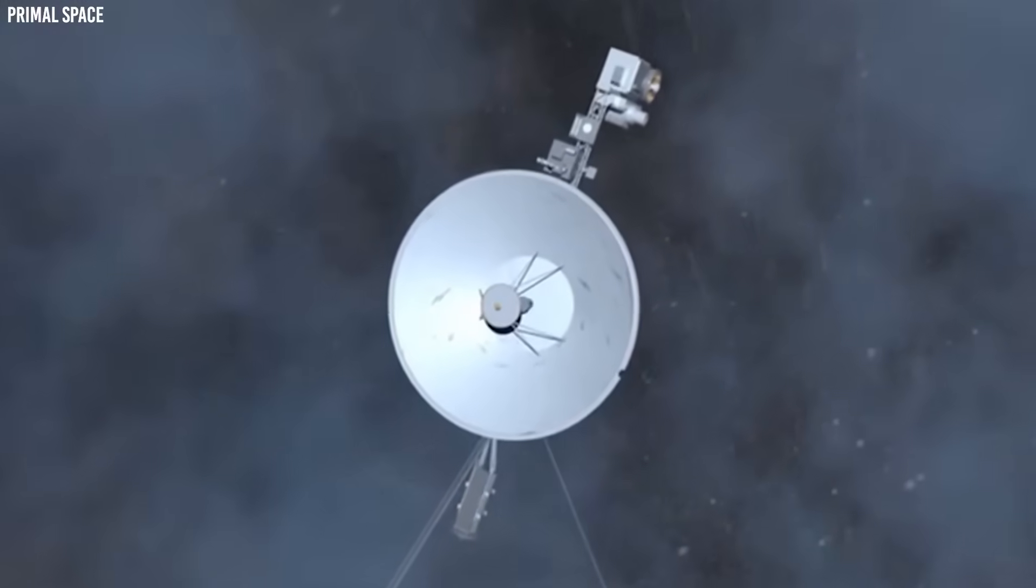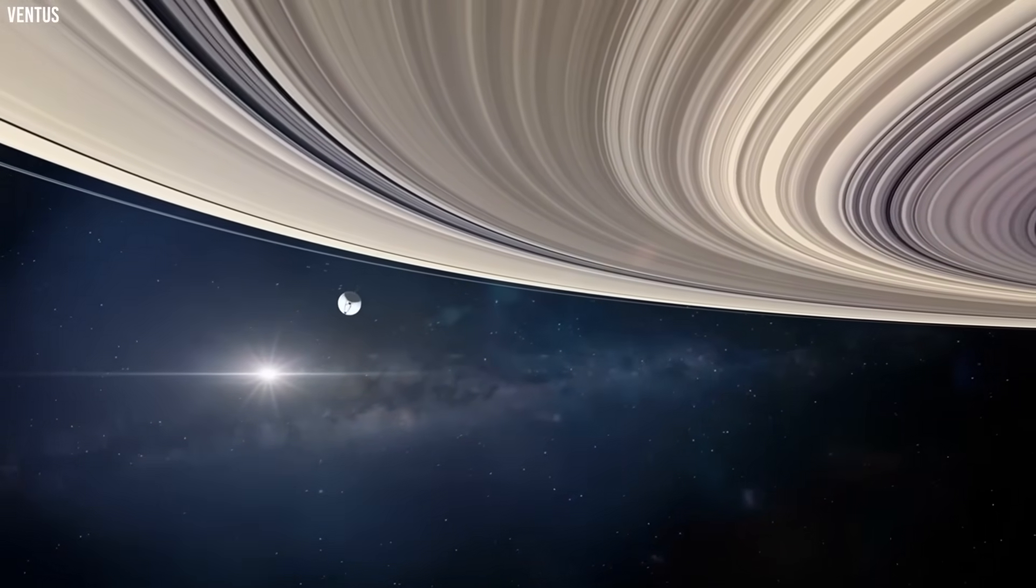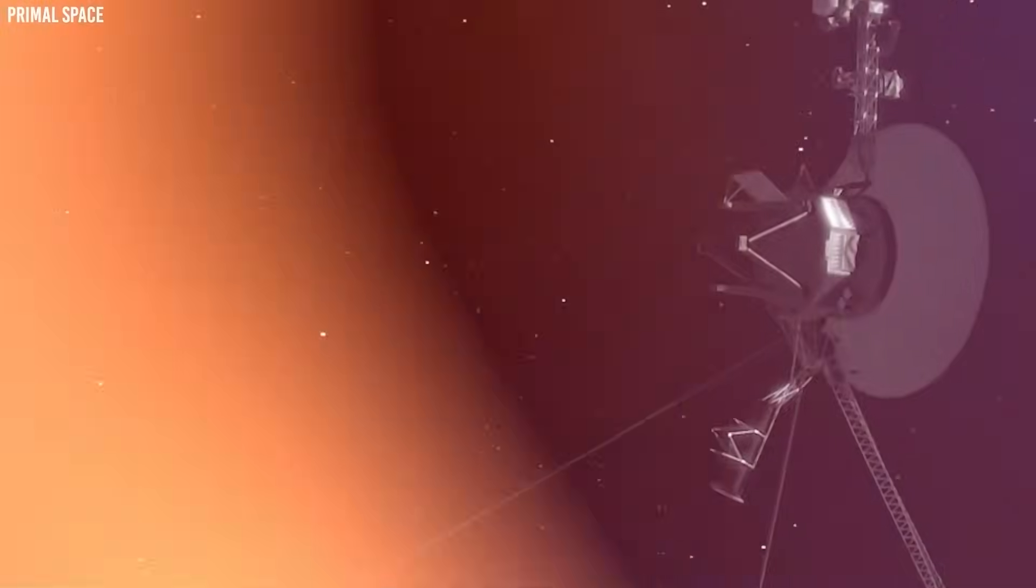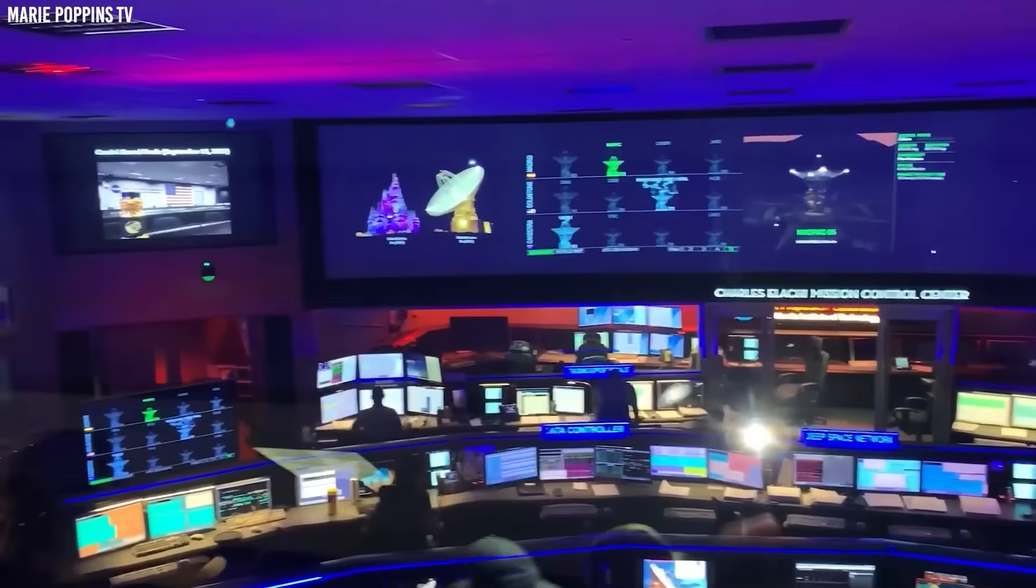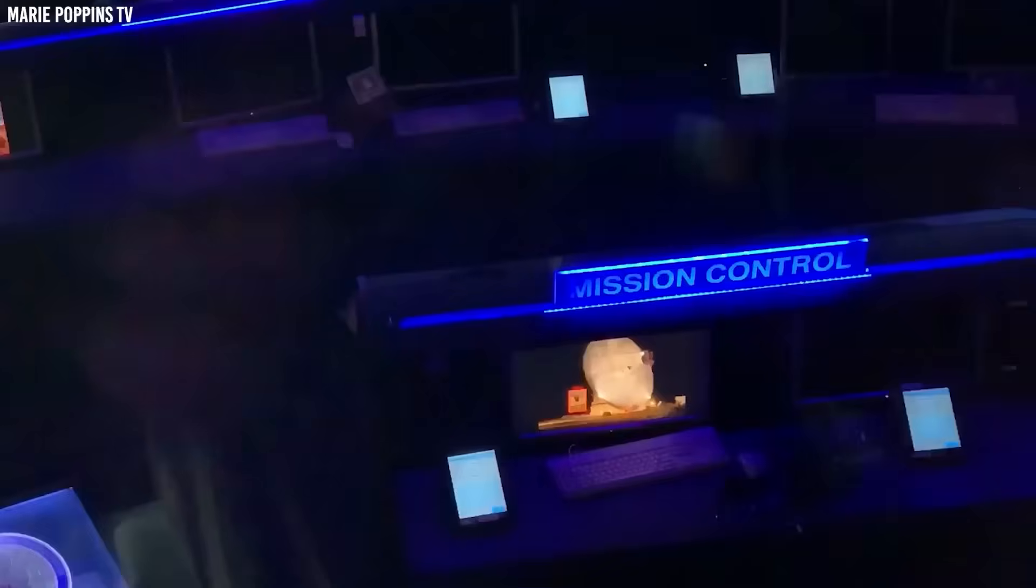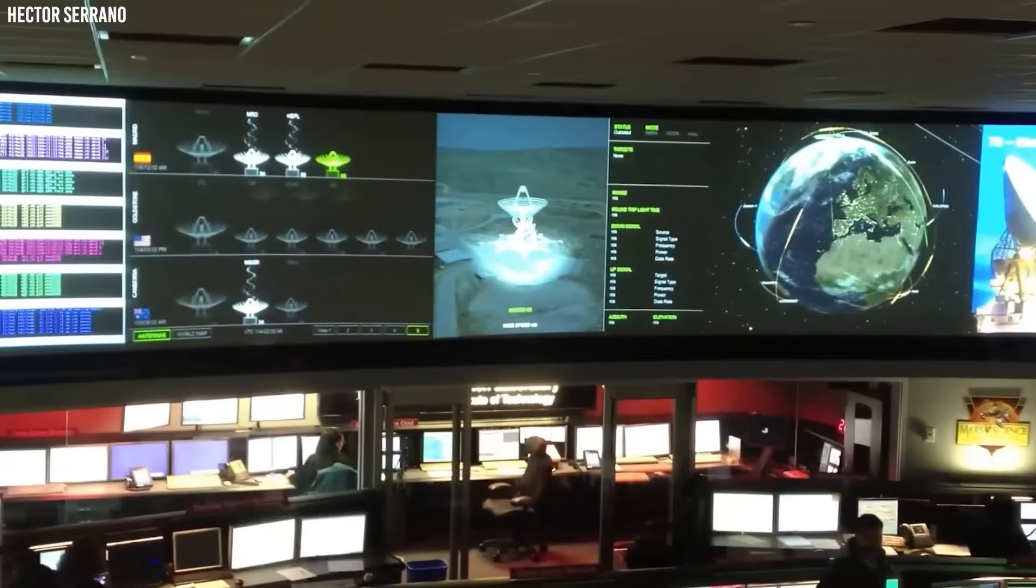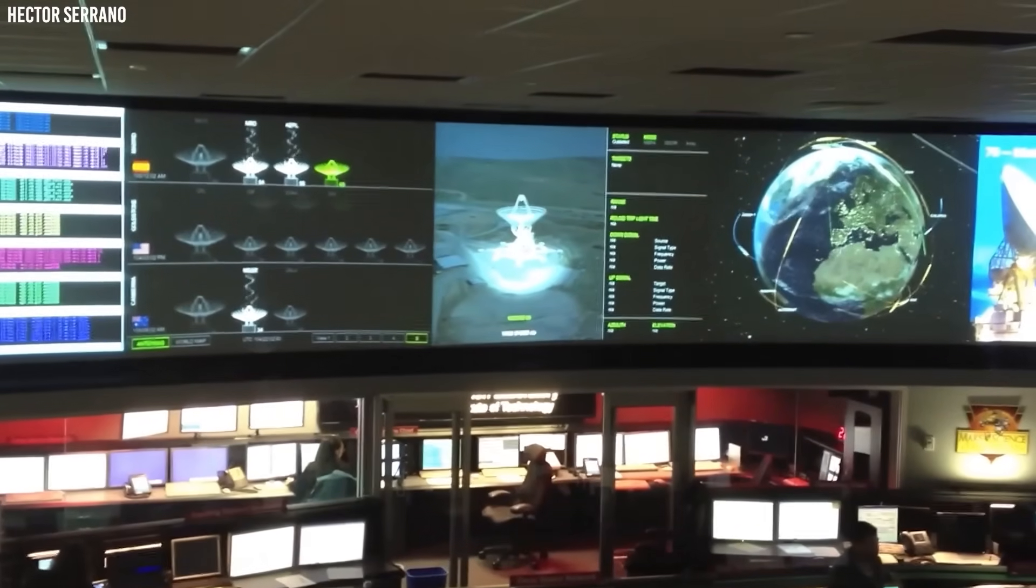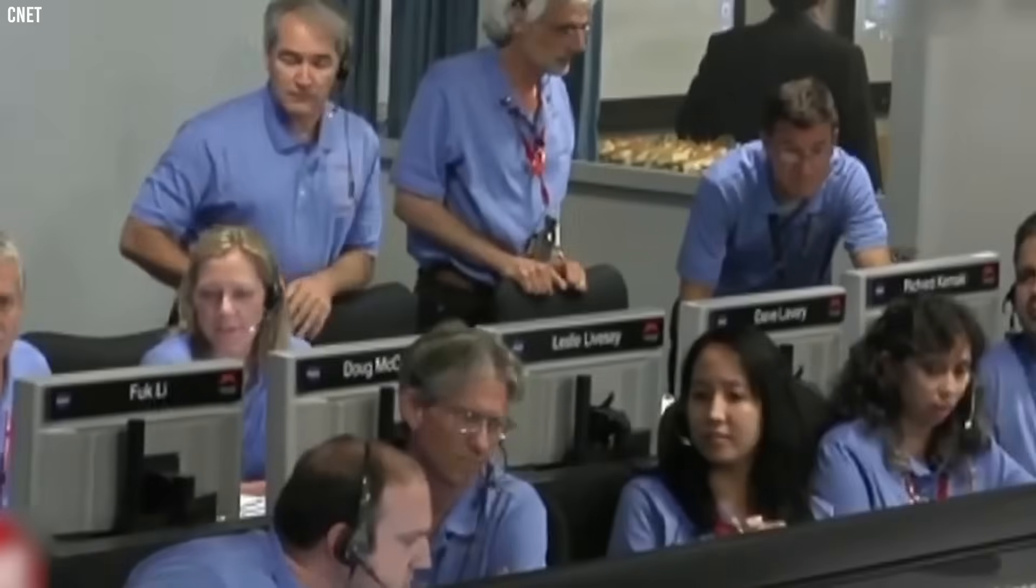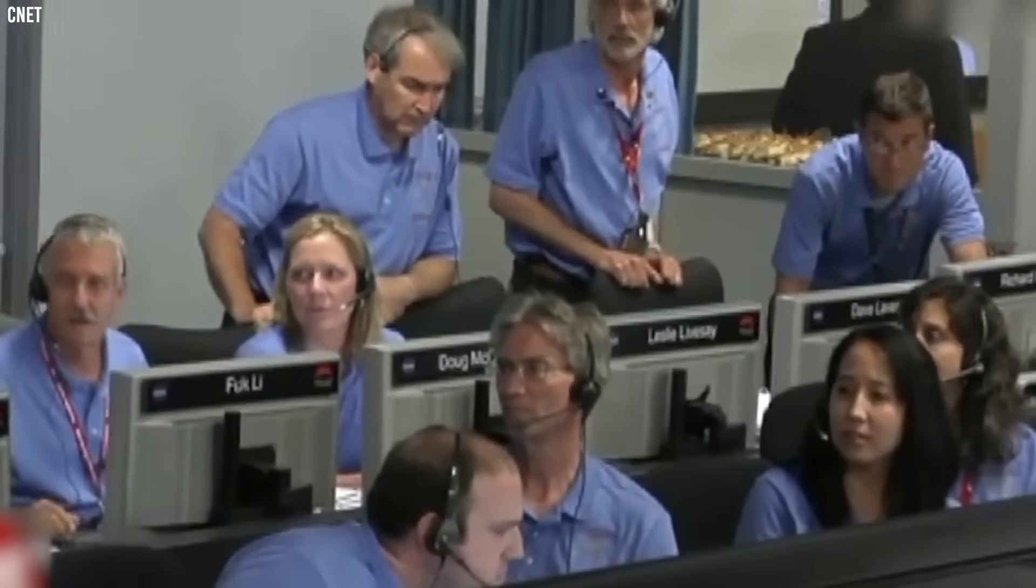Voyager's legacy goes beyond science. The golden record it carries is humanity's longest-lasting cultural artifact, a time capsule that could outlive Earth itself. The iconic pale blue dot image forever altered our sense of place in the universe. And the spacecraft itself, a 1970s machine still functioning at the edge of the solar system, stands as a tribute to human determination and creativity. Even if the recent anomalies prove mundane, they've already pushed scientific boundaries by prompting new models and analytical techniques. If they are truly unprecedented, they might force us to rethink what we know about space itself. In both cases, knowledge is gained, and that is the essence of exploration.